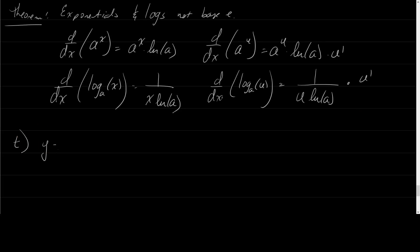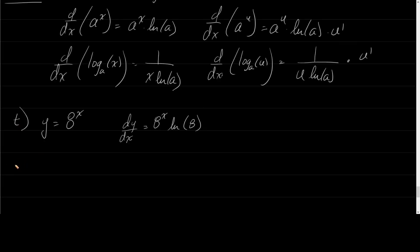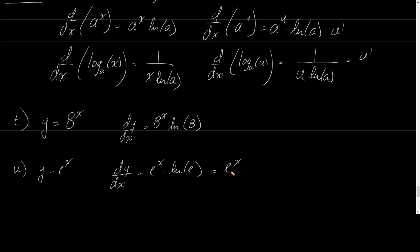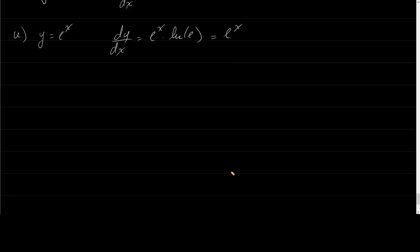Let's do y equals 8 to the x. Using the formula, dy/dx is 8 to the x times ln of 8. To verify consistency: for e to the x, this formula gives e to the x times ln of e. Since ln of e is just 1, we just end up with e to the x — consistent with our existing rules for the derivative of e to the x.